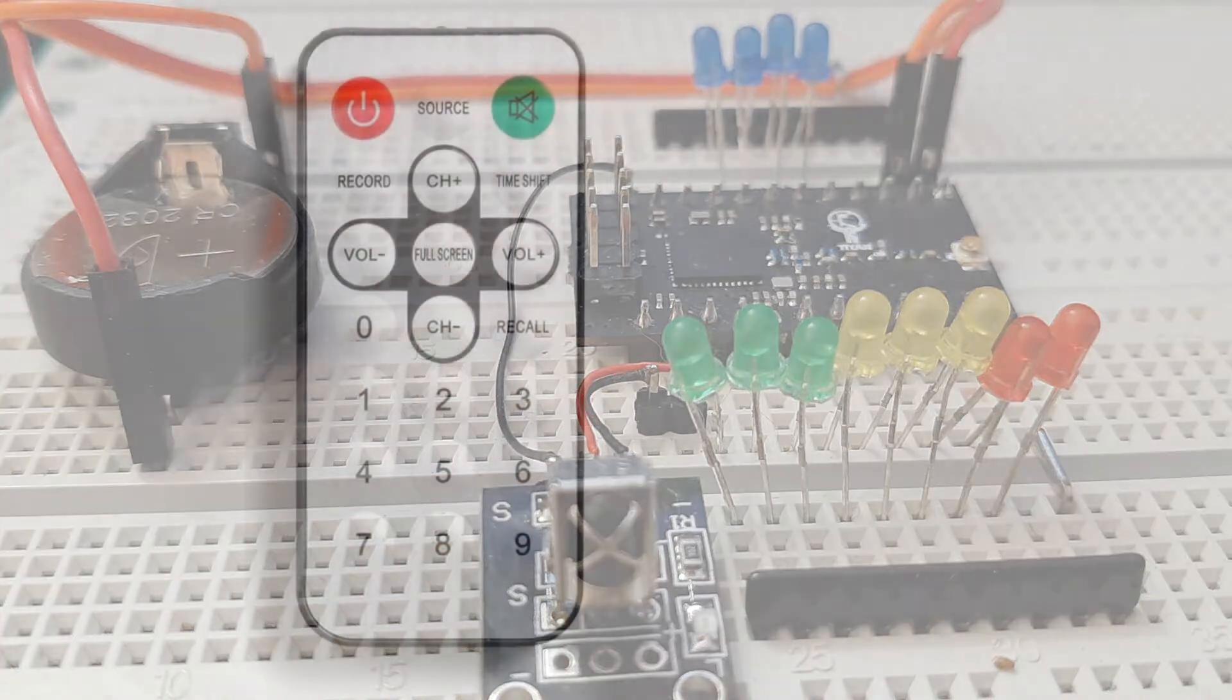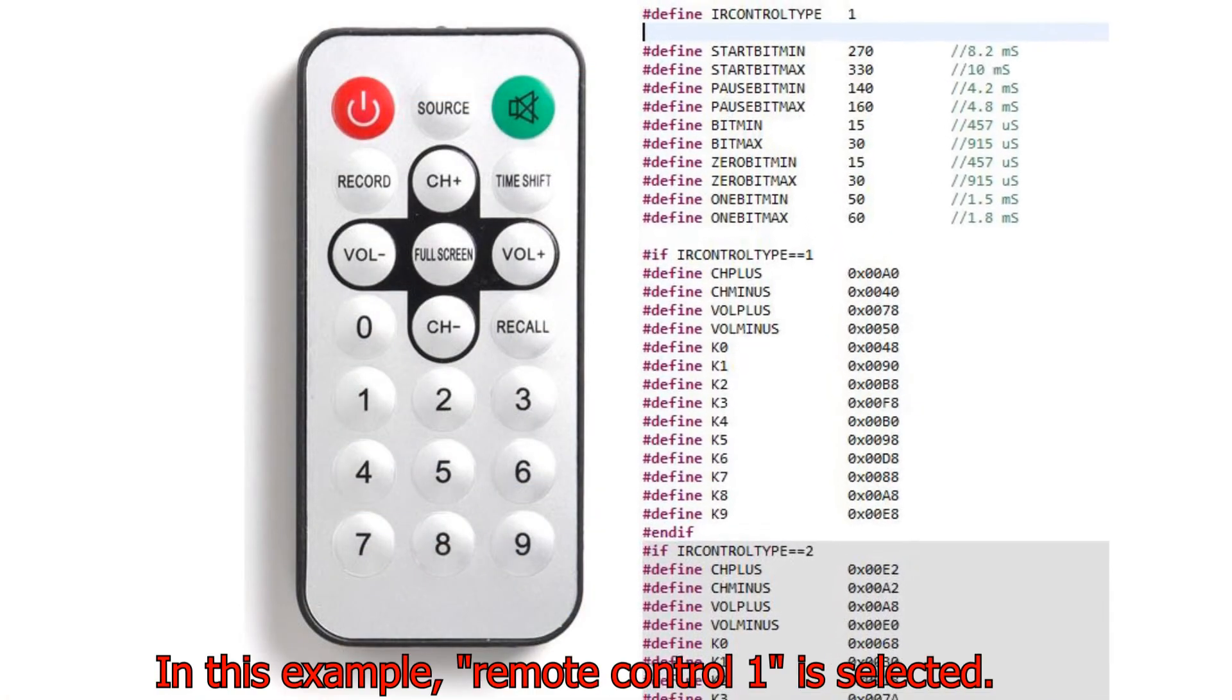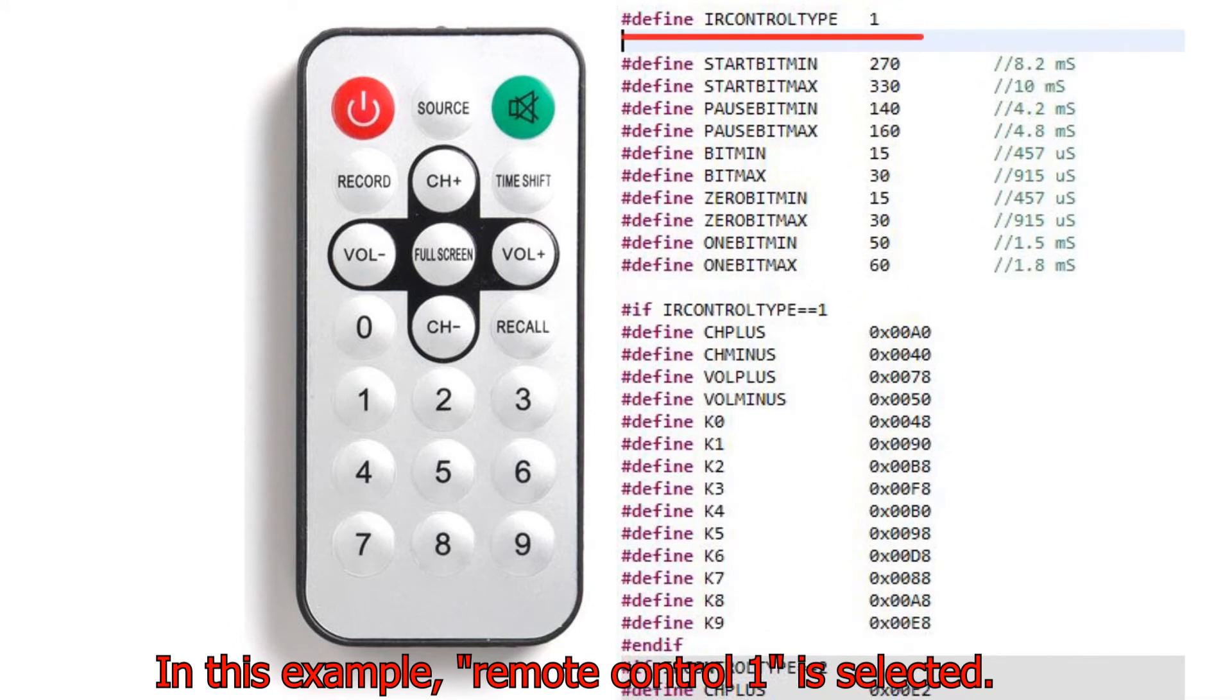Let's move on to the program. First we will determine the type of our remote control. In this example remote control 1 is selected.